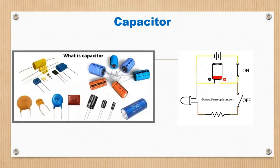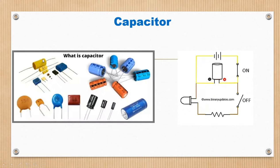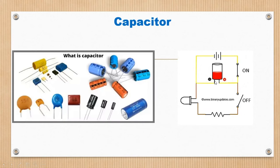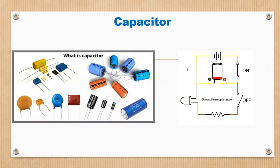Coming to another electrical component: capacitor. There are different varieties of capacitors. The fundamental role of a capacitor is to store electrical energy in the form of an electric field, or through storage of charges. Its behavior in presence of source is that it charges, and in absence of source, it discharges. This is the fundamental understanding of what a capacitor is.